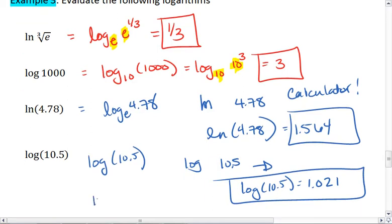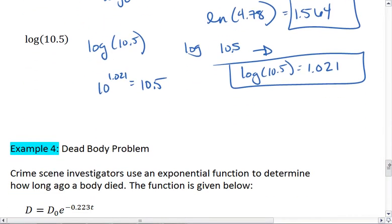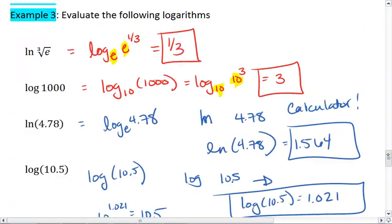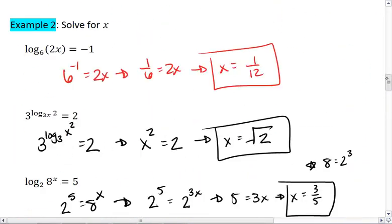Which means that 10 to the 1.021 should be 10.5. Okay, these are the basic calculation problems that you need.